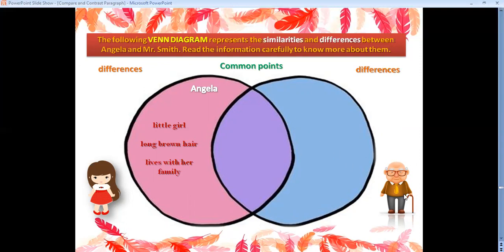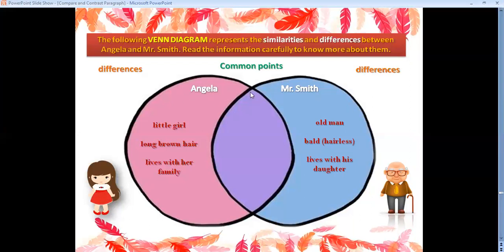Now, what about Mr. Smith? He's an old man — that's obvious. He's bald — hairless, he doesn't have hair — and he lives with his daughter. These are the different points, the differences between Angela and Mr. Smith.